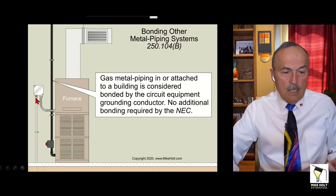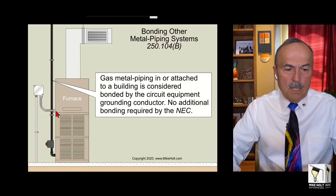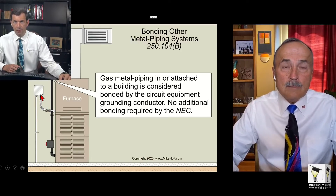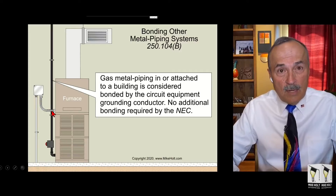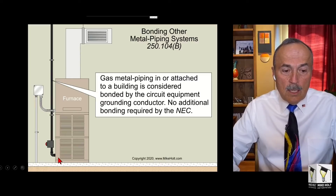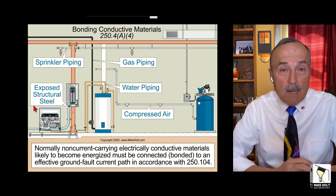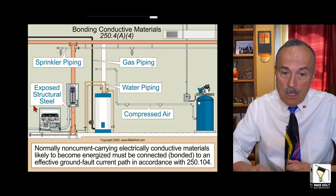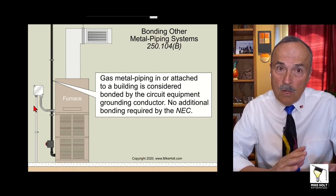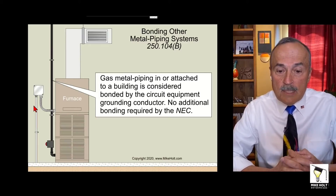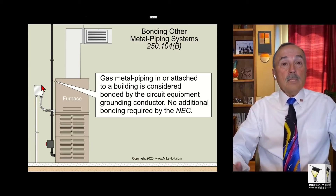EMT is considered an equipment grounding conductor. In this case, probably a 15-amp circuit, not more than six feet of flex metal conduit, which is considered part of the effective ground-fault current path. That means the furnace and the gas piping connected to it are already connected to the equipment grounding conductor — they're bonded. Per 250.104(B), no additional bonding is required by the NEC. You're done.